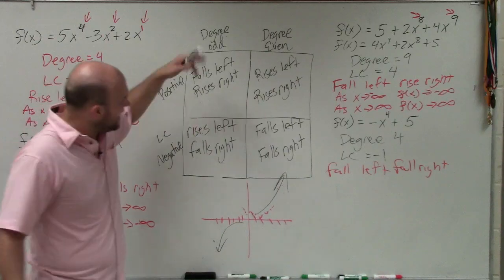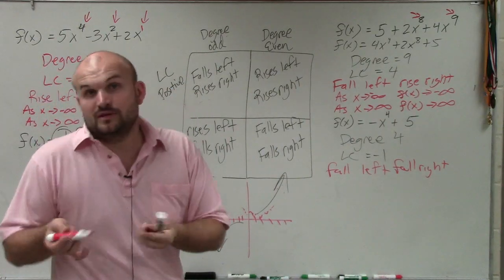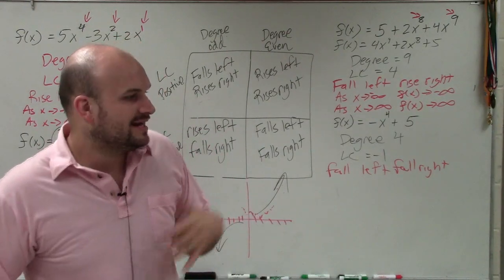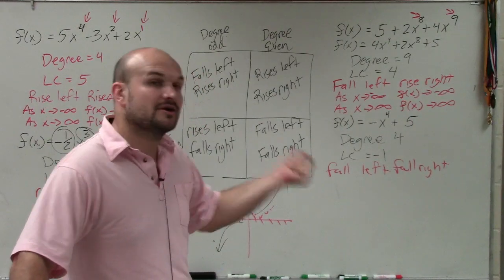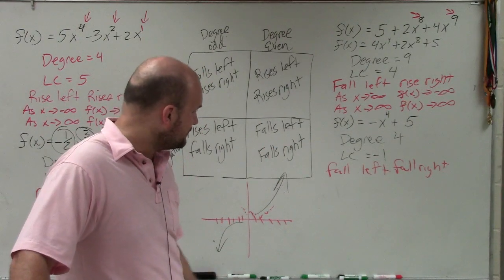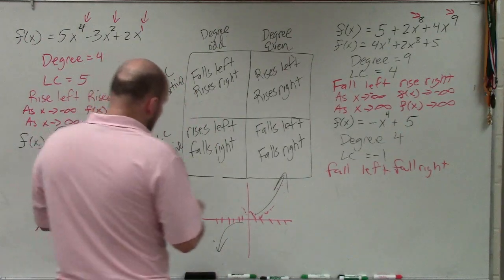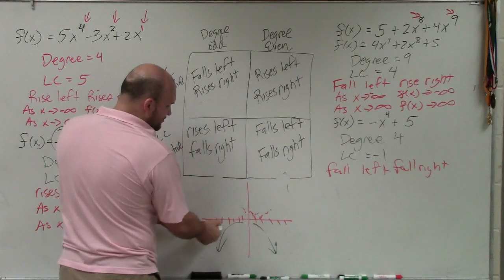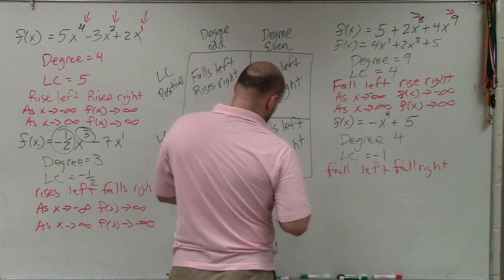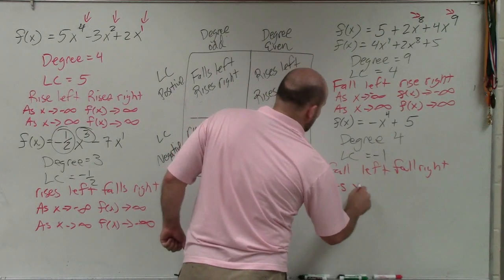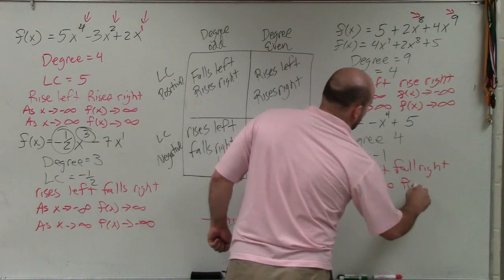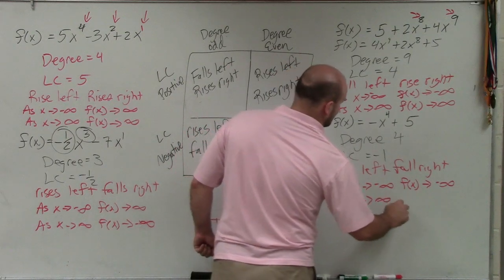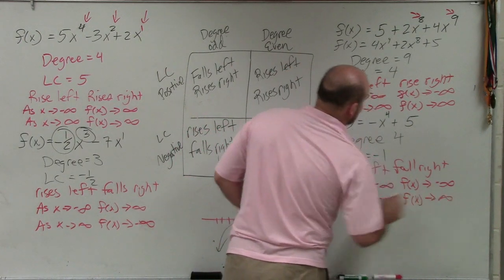Ladies and gentlemen, it's very important to have this diagram memorized. Read it a couple of times before you go to bed and before you wake up and you'll have it memorized — it's not difficult, it just takes a little practice. My graph falls left and falls right. So as x approaches negative infinity, f of x approaches negative infinity; and as x approaches positive infinity, f of x approaches negative infinity.